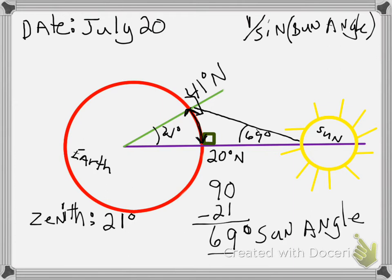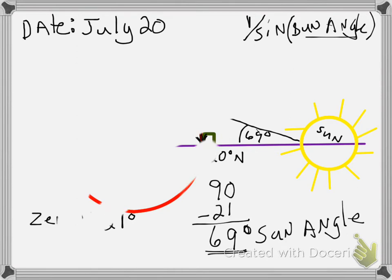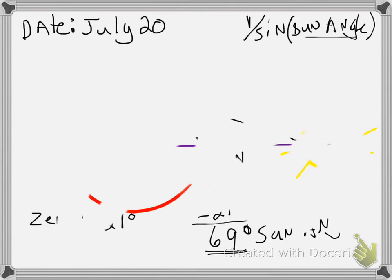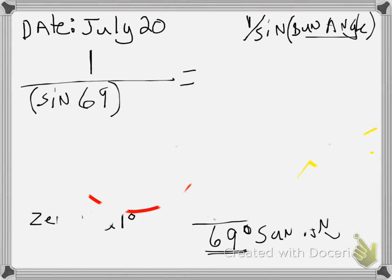So to do this part, all I have to do is plug my Sun angle into this equation, and I can get how much unit. And it should be just above 1, but not by much. So let me do a little erasing to make some room so that I can write out my equation. And so to plug this in, I'm going to do 1, which will all be divided over the sine of 69.